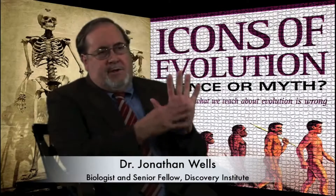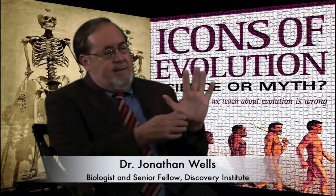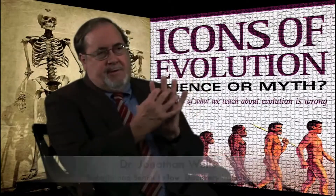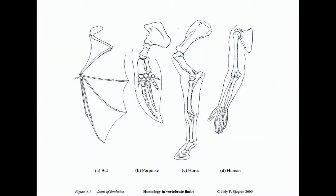If you look at the bones in the human hand, the way they're constructed and put together, their structure and positions, and you compare that to a bat's wing or a porpoise's flipper or any number of other vertebrates, the structure and position of the bones are actually strikingly similar. You can sort of match them up one for one.